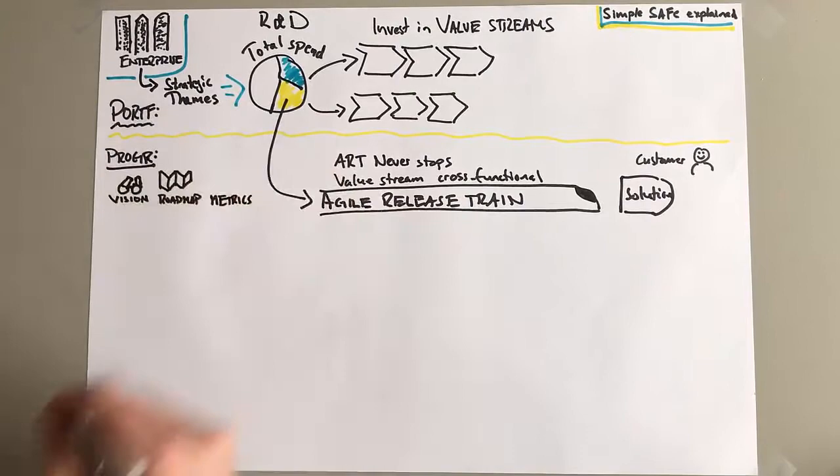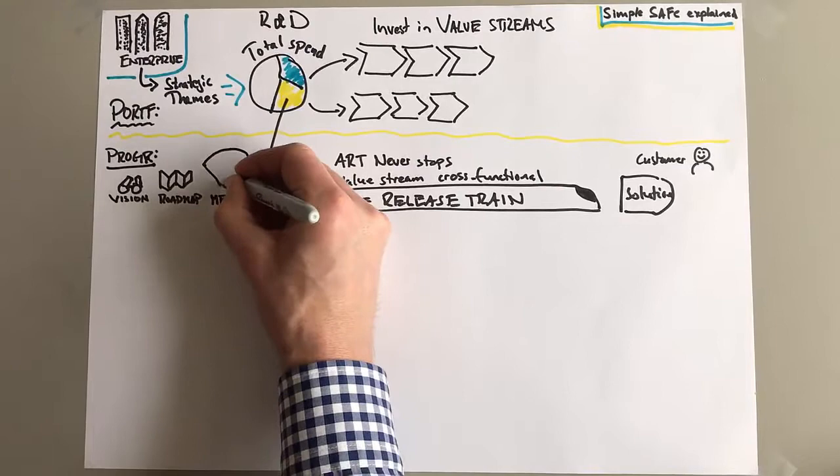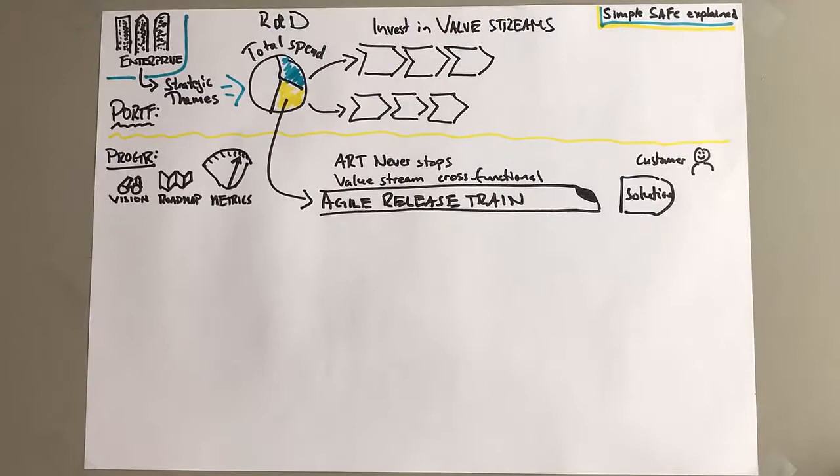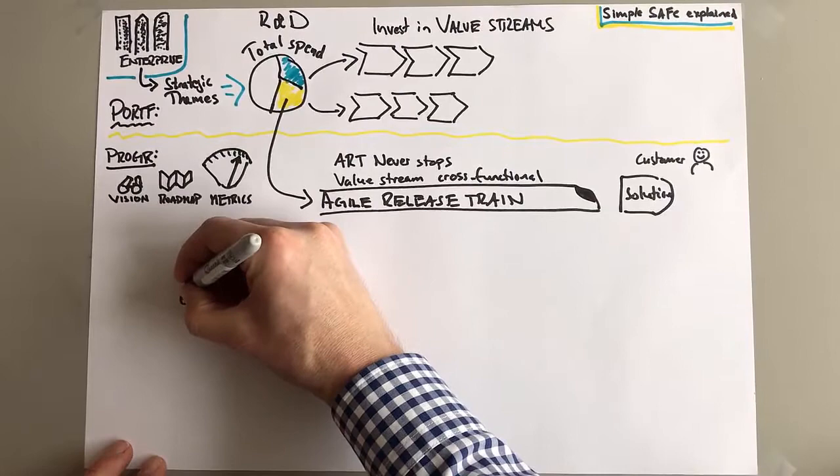And you have on the program level, you're also looking at metrics like how much are we able to deliver, how happy are the people working here, metrics that are important to you. And not least of course the flow - how fast can we deliver something. So this is all on the program level.